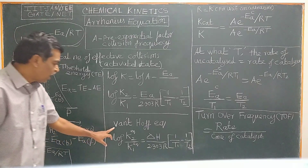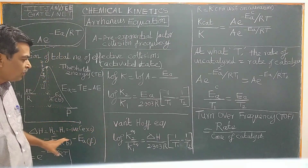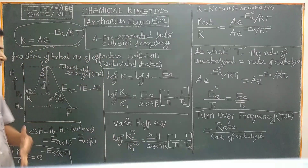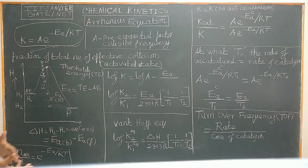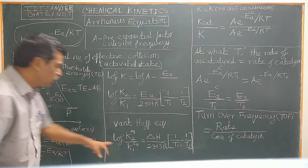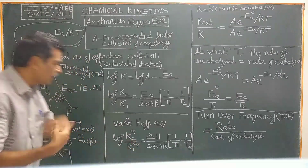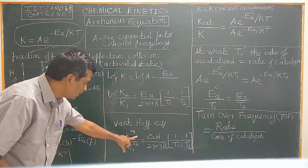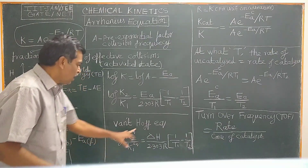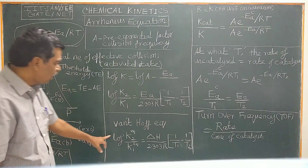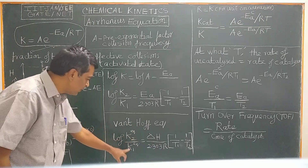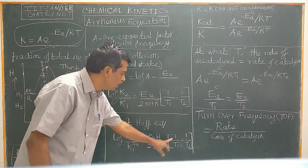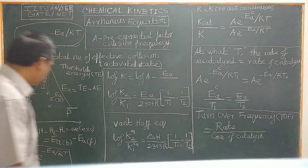According to the van't Hoff equation, the temperature dependence of the equilibrium constant can be expressed as: log of K2 divided by K1 equals delta H over 2.303R times (1/T1 minus 1/T2), where K1 and K2 are the equilibrium constants at temperatures T1 and T2 respectively.